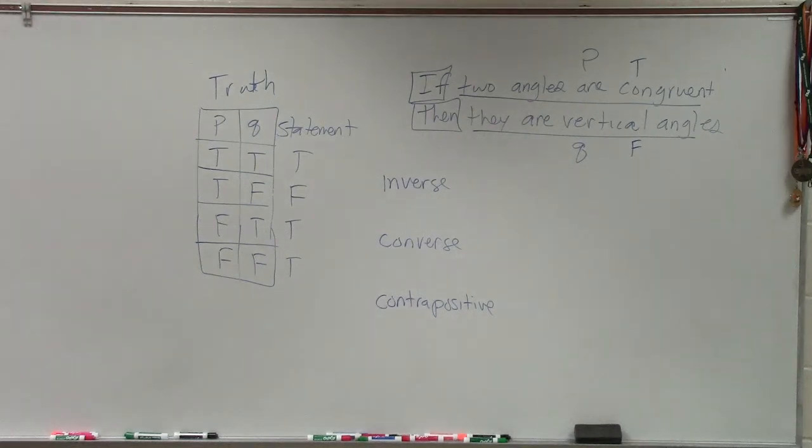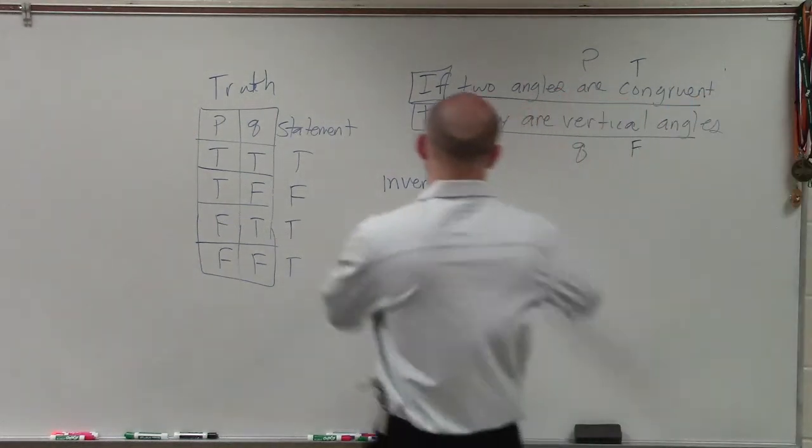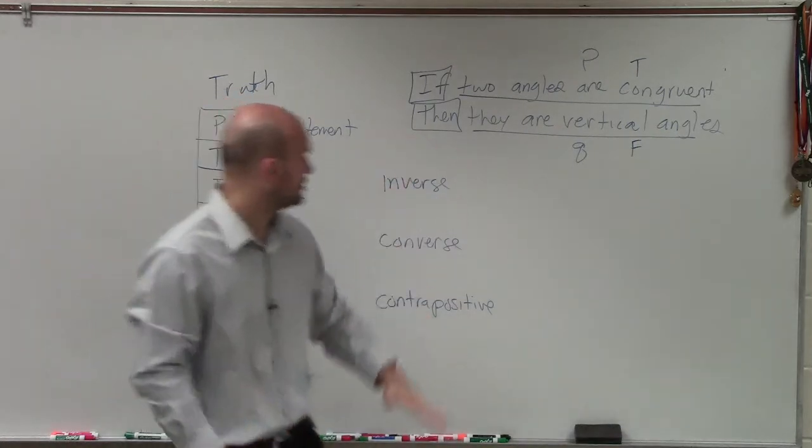When going through this, we have this statement. We talked about the truth. Here's a statement: if two angles are congruent, then they are vertical angles.